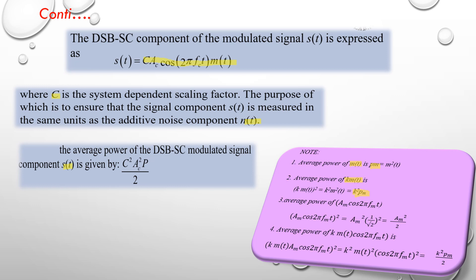The third relation: the average power of A_m cos(2πf_m t) is A_m² / 2, since cos²(2πf_m t) = 1/2. The fourth relation: the average power of k × m(t) × cos(2πf_c t) requires taking the square: k² × m²(t) × cos²(2πf_c t), giving k² × P_m / 2.